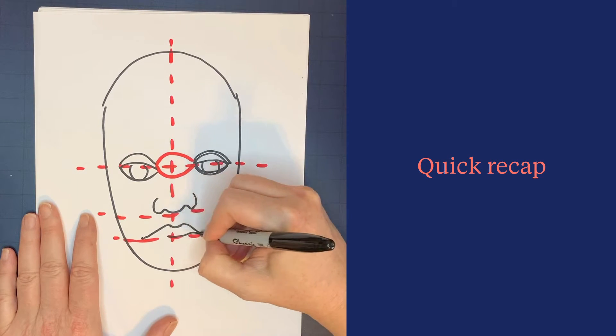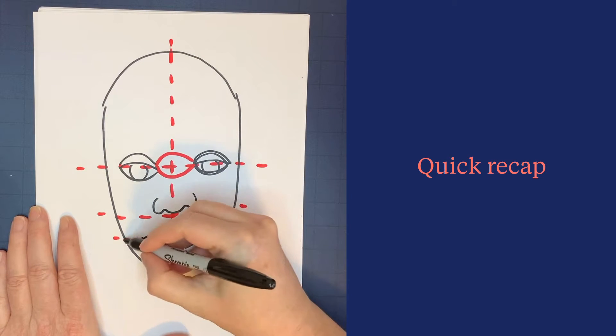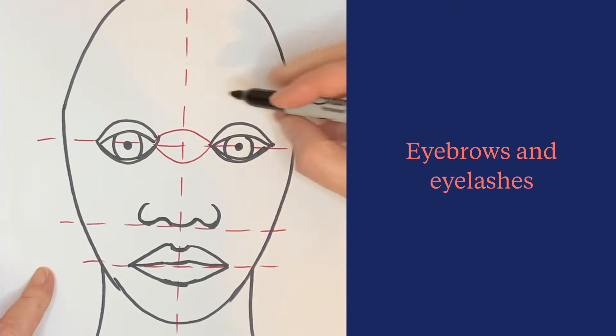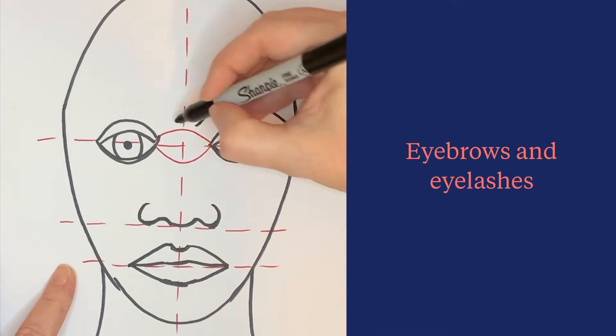Your nose lines up with the inside corners of your eyes, and your mouth lines up with the middle of your eyes. Now add eyebrows and eyelashes. Your eyebrows should start before your eye starts and end after your eye ends, making a gentle curve.